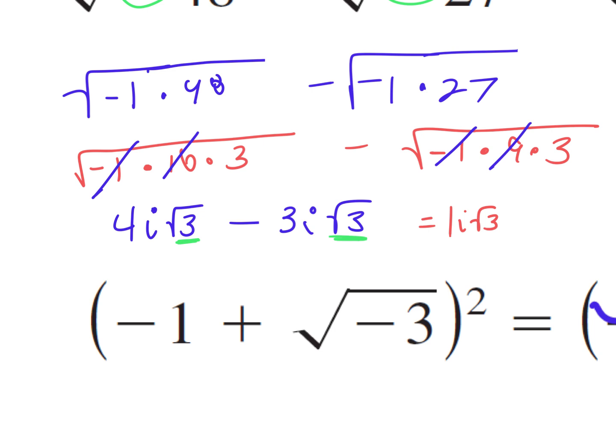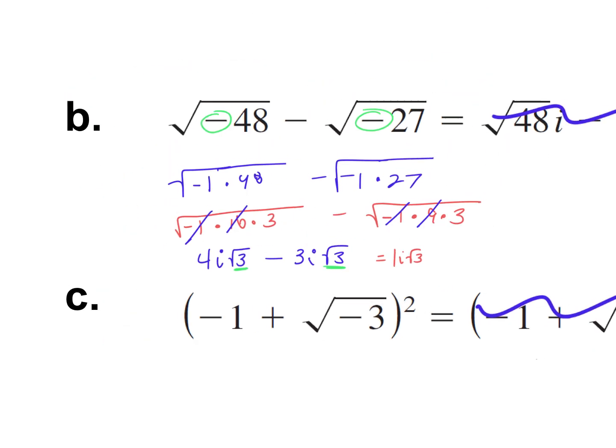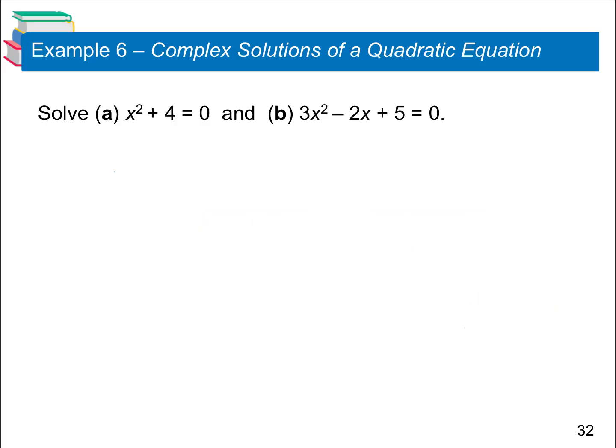Tomorrow I'll give you time in class to practice this, and I'll post the test review. All of this is just combining like terms — instead of x's and y's, you have an i. Real stays with real, imaginary stays with imaginary. When you see i squared, cross it off and make it negative 1.